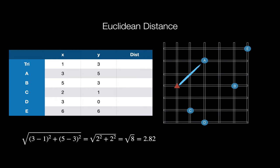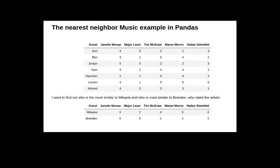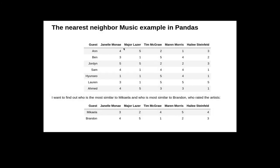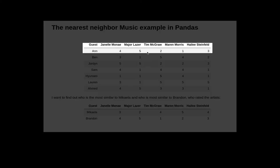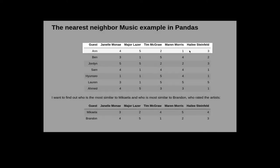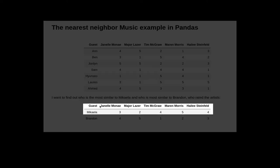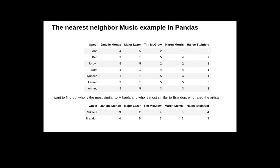Let's look at an example. Here I have people like Ben, Jordan and so on, and they rated on a scale of one to five different artists. Janelle Monáe rated four, Major Lazer five, Tim McGraw two, Maren Morris one. We can see how they like different types of music. Now I want to find for Michaela, who's the closest person in this list to Michaela, and also find who's the closest to Brandon. That's my goal, to find the nearest neighbor to Michaela in one two three four five dimensions.